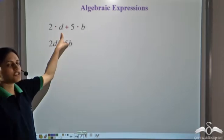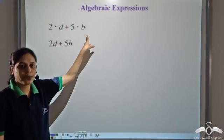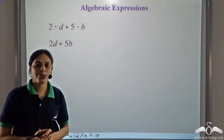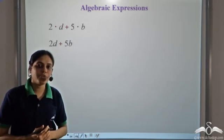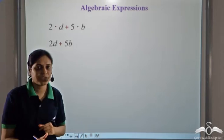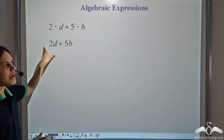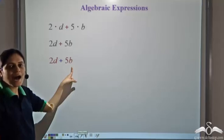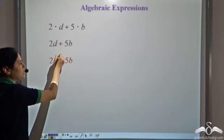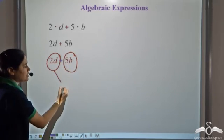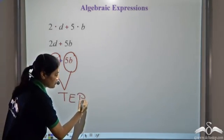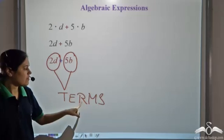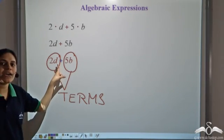We have 2 into d plus 5 into b, or 2d plus 5b. Now there is another way to look at algebraic expressions. Algebraic expressions can be viewed as addition of terms. So what is being added here? We are adding 2d to 5b. So 2d and 5b are the terms which are being added to form this algebraic expression.